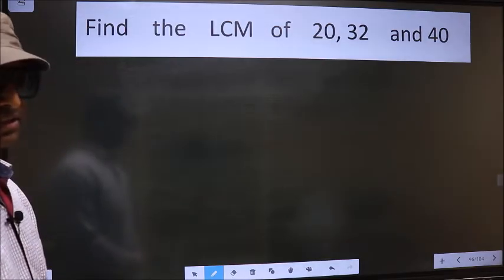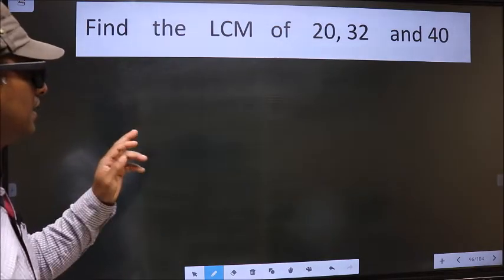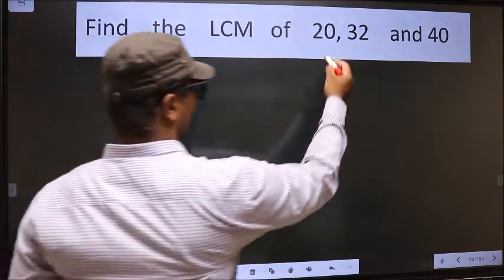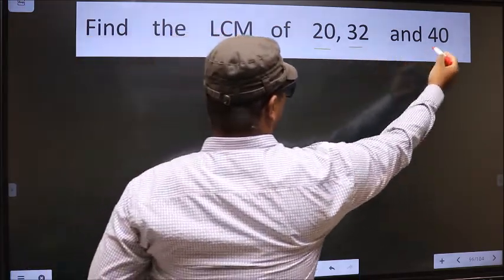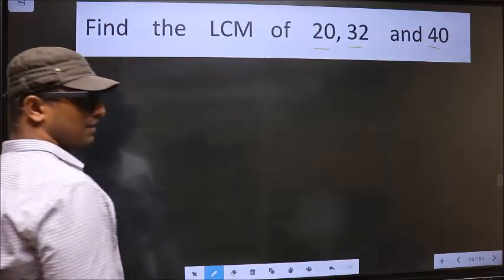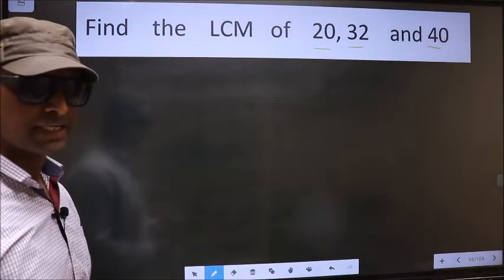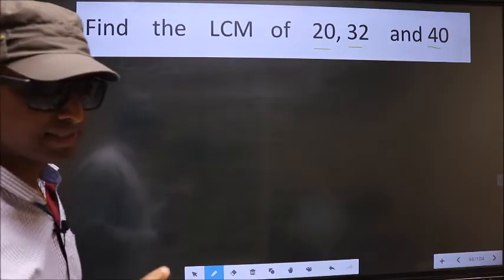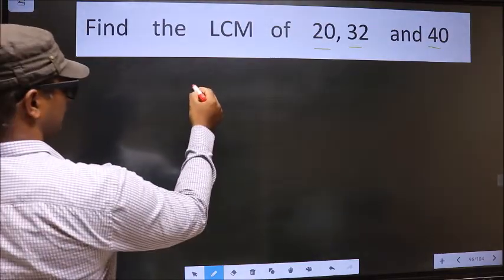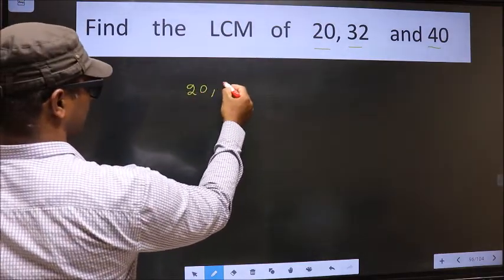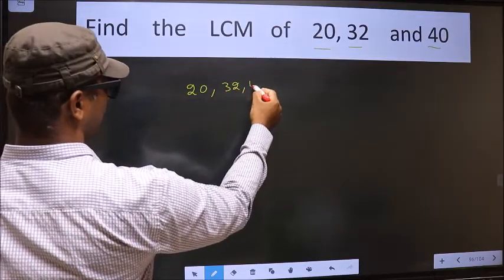So, find the LCM of 20, 32 and 40. To find the LCM, first we should frame it in this way. See, that is 20, 32, 40.